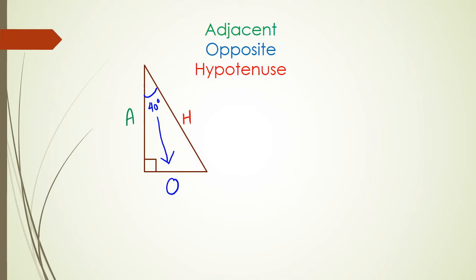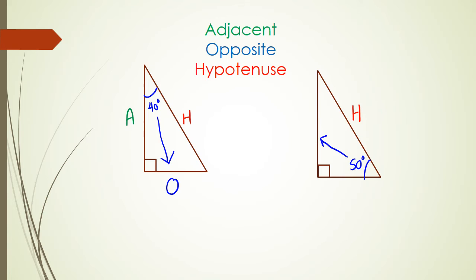Let me show you another diagram. Say for example this angle here is 50 degrees. Your hypotenuse hasn't changed because the hypotenuse is still that longest side — the side opposite the right angle. The side that's actually opposite the angle is Opposite, and then the side that's right next to the angle is Adjacent.